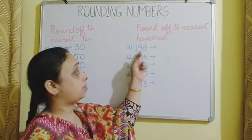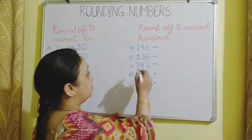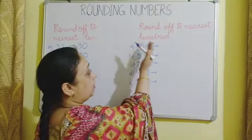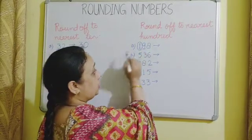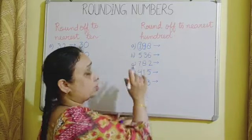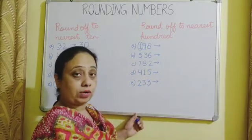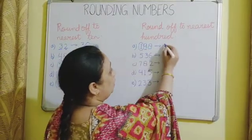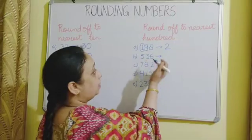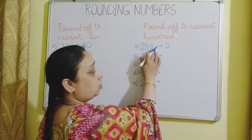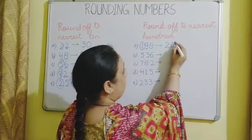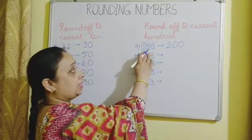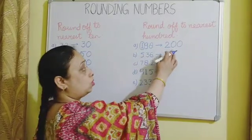Now we have to round off to nearest 100. We have the number 198. Find the number in the 100's place — that is 1. To the right of this, we have the 10's place, and this digit is 9, which is more than 5. So we are going to add 1 to the 100's place. 1 plus 1 will be 2. And to the right, we place 0's in place of 9 and 8. Therefore, 198 is rounded off to 200.